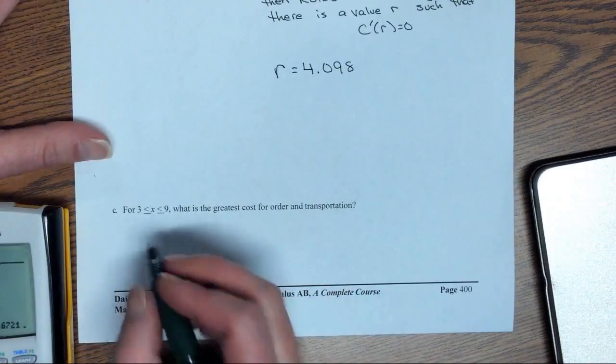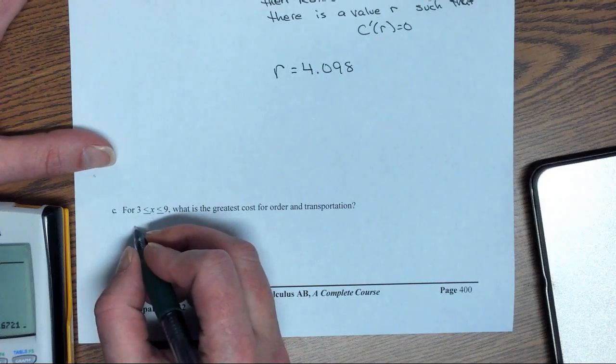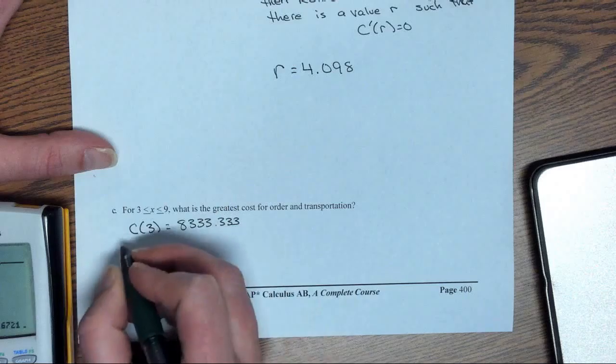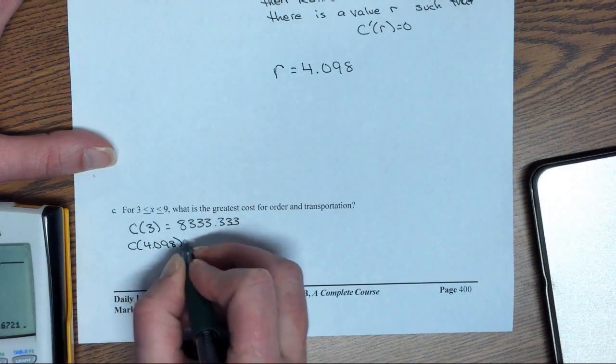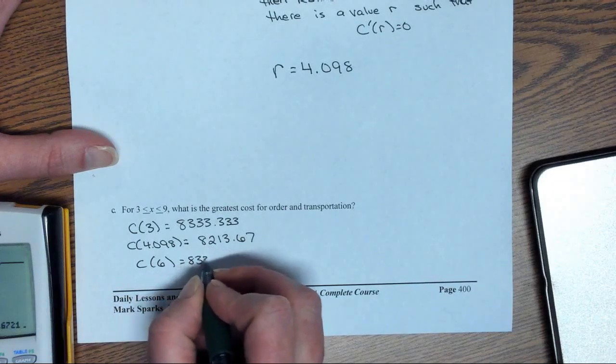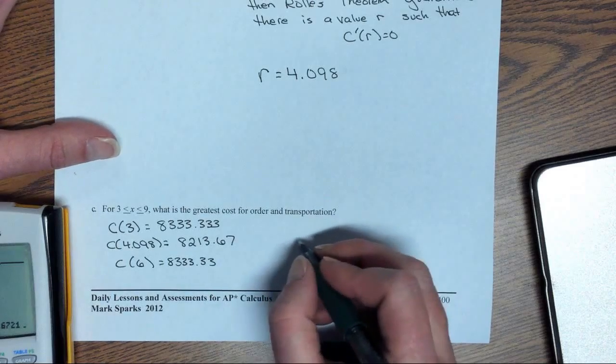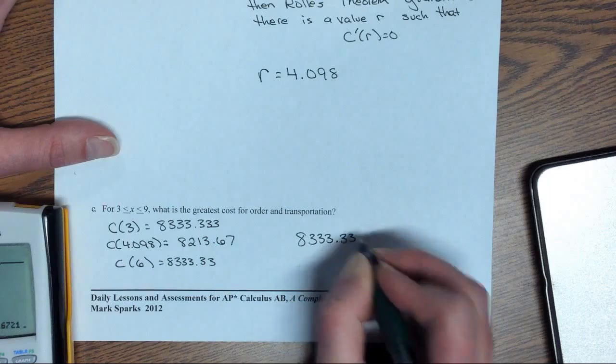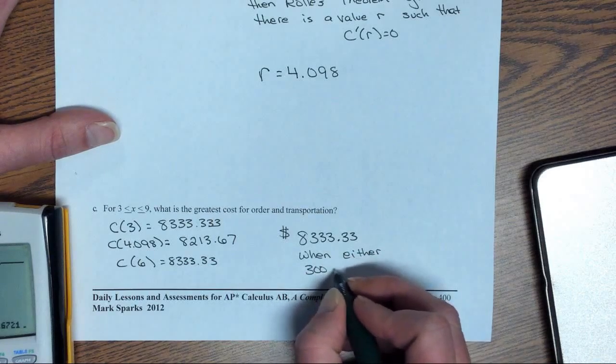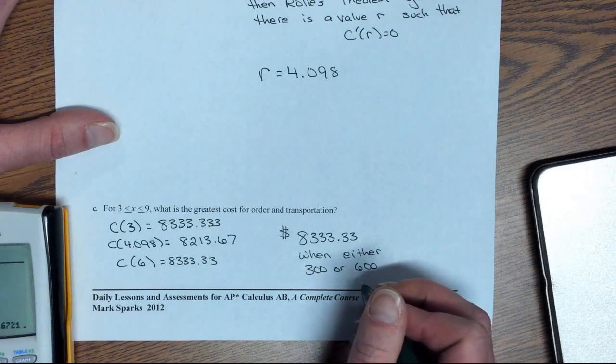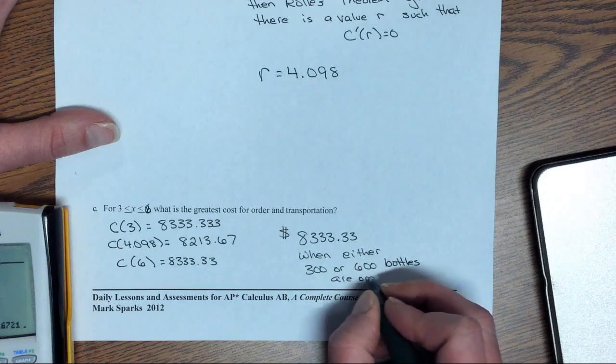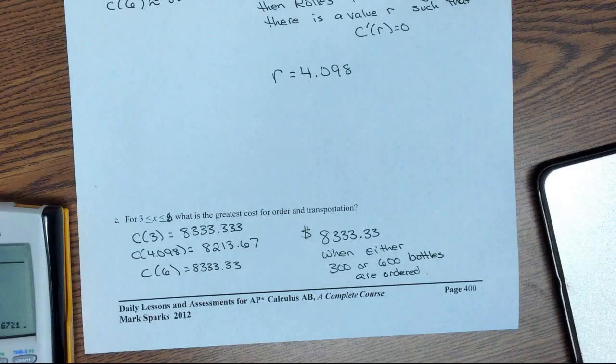And here's the y value that goes with it. So for this part, I'm going to write c equals 4.098. But down here, I need to find the greatest cost. Now, remember, we are continuous. So our maximum cost, we need to check our endpoints, which we know what they were at. We need to check that minimum value. And we need to check the other endpoint. Which one is our overall absolute maximum? Well, that's the $8,333.33. When either 300 or 600 bottles are ordered. Now, two more.